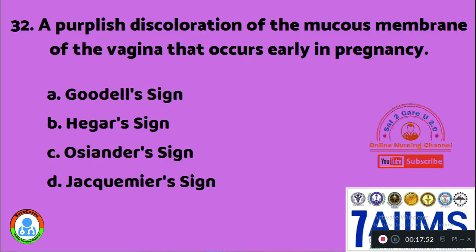Question 32: A purplish discoloration of the mucous membrane that occurs only in the early stage of pregnancy. Option A: Goodell's sign. Option B: Hegar's sign. Option C: Osiander's sign. Option D: Chadwick's sign. Purplish discoloration of the mucous membrane of the vagina is known as Option D, Chadwick's sign.